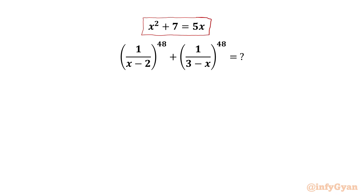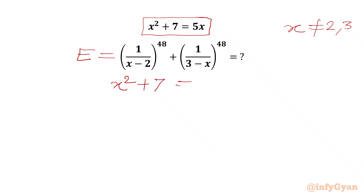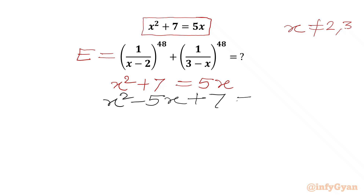From our equation and expression, x cannot be equal to 2 and x cannot be equal to 3, as it won't satisfy our equation and the denominator cannot be 0. So let's get started by considering the required expression as E. We begin with x squared plus 7 equal to 5x, taking all terms to the left-hand side to write x squared minus 5x plus 7 equals 0.